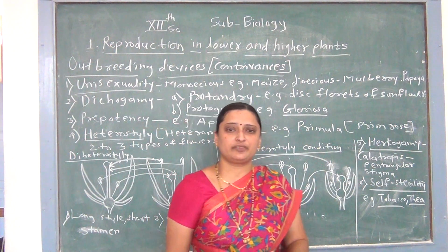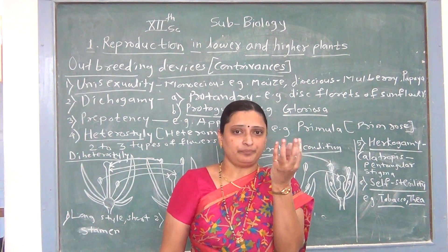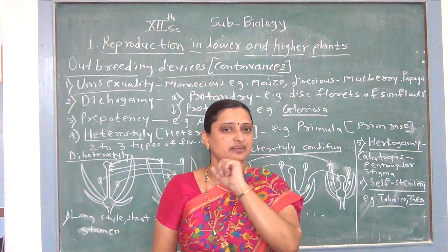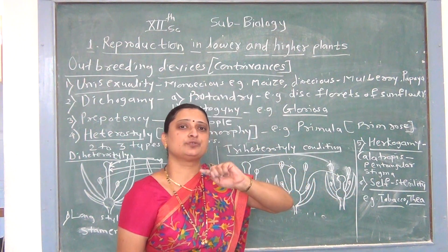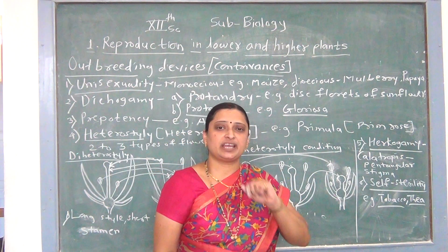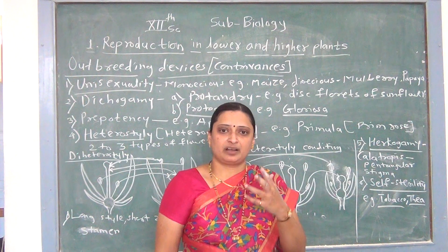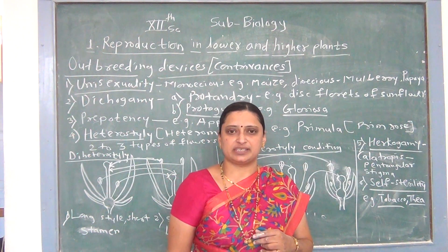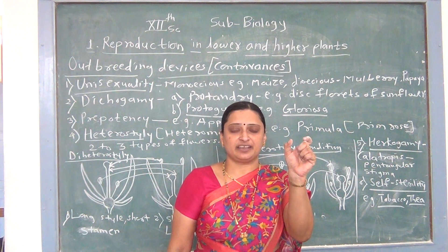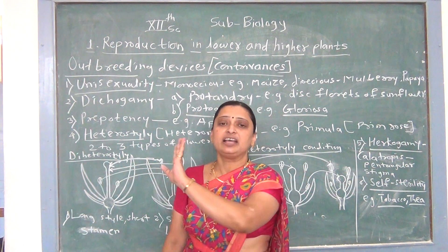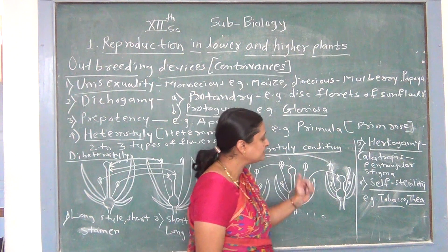Calotropis flower is a special type of flower which has five anther lobes fused together, with the stigma present centrally between the five fused anthers. The stigma is pentagonal. Surrounding the stigma are five fused anther lobes, and between the stigma and the fused anthers, the pollinarium is present. The pollinarium attaches to the insect's proboscis when the insect lands on the pentagonal stigma, and the insect carries the pollinarium to another flower, leading to cross-pollination. Due to the pentagonal stigma, self-pollination is prevented.